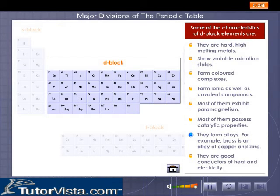They form alloys. For example, brass is an alloy of copper and zinc. They are good conductors of heat and electricity.